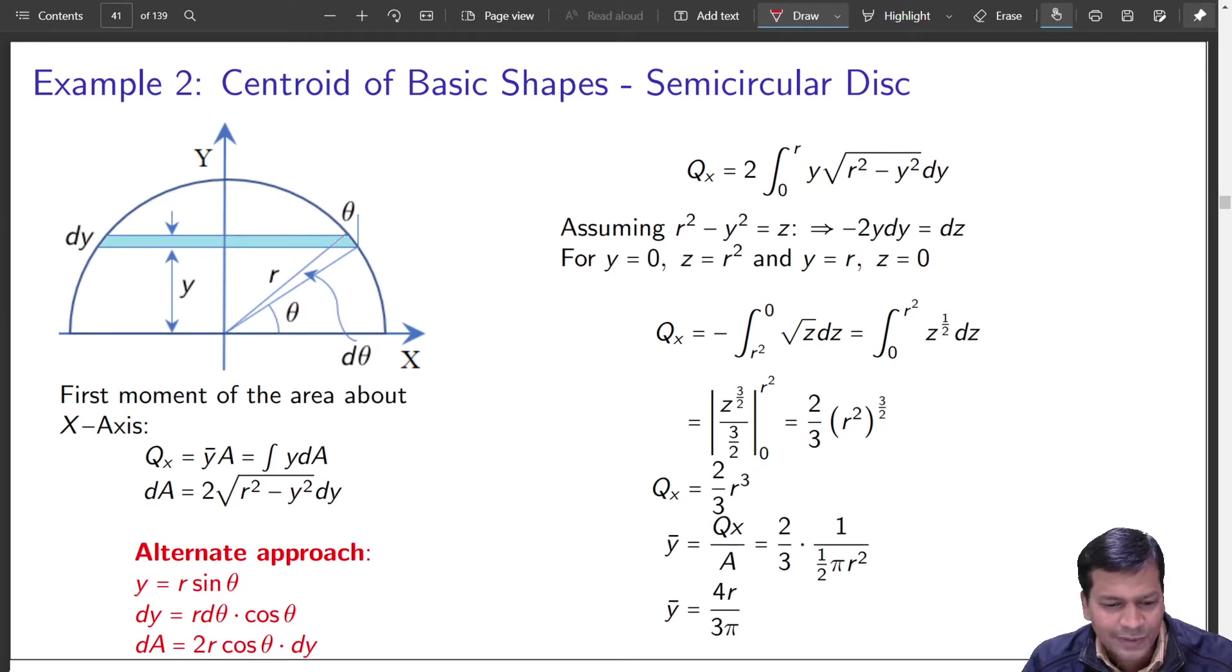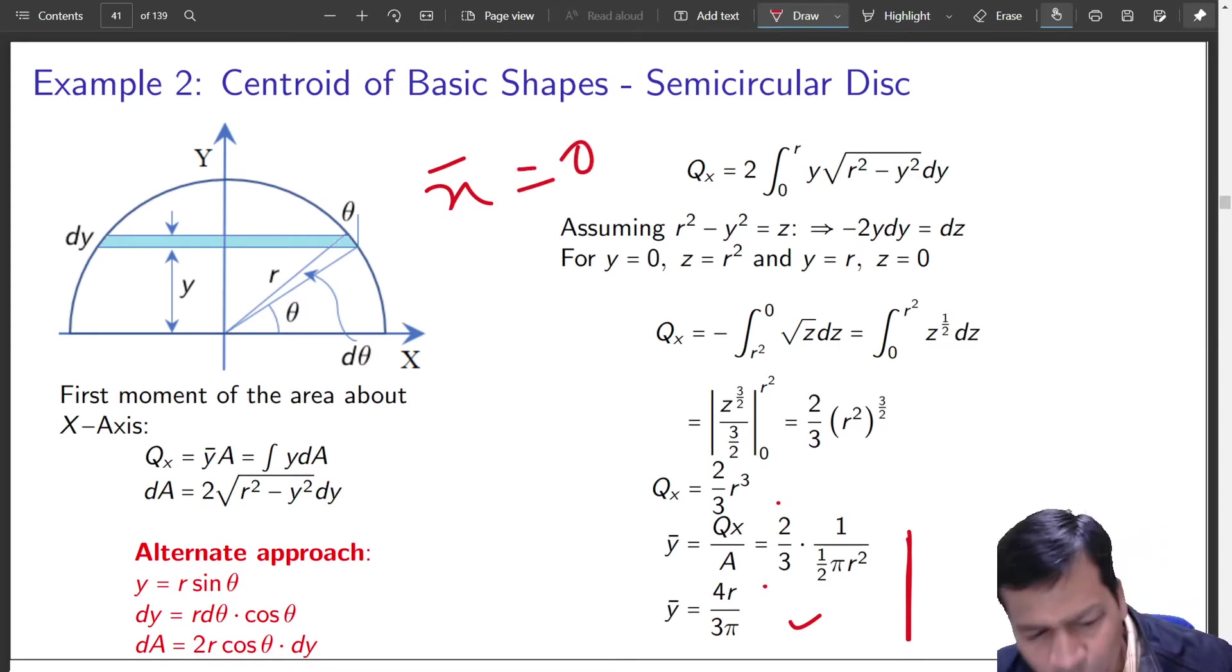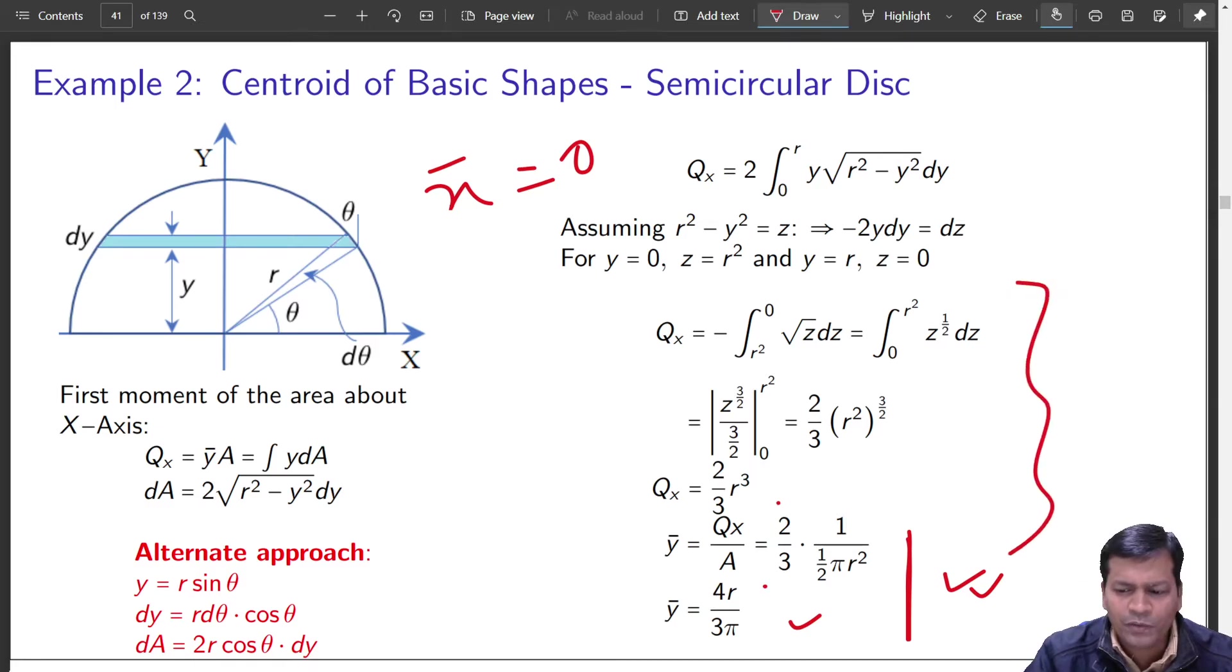But that is not the case. Why? Y bar. This is y bar actually. This is y bar taking qx by A. This is y bar. X bar will be equal to 0. Is it not? X bar will be equal to not y bar equal to 0. So this is okay? Very good. So this is problem number 2 for a semi-circular disc. Although it looks polar, but solving it this way went on well. Much simpler.